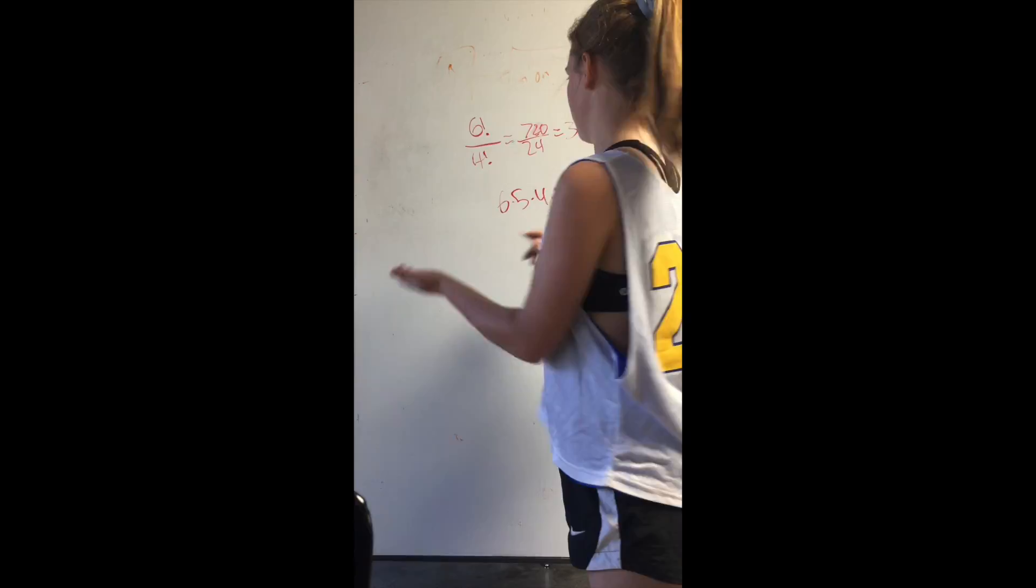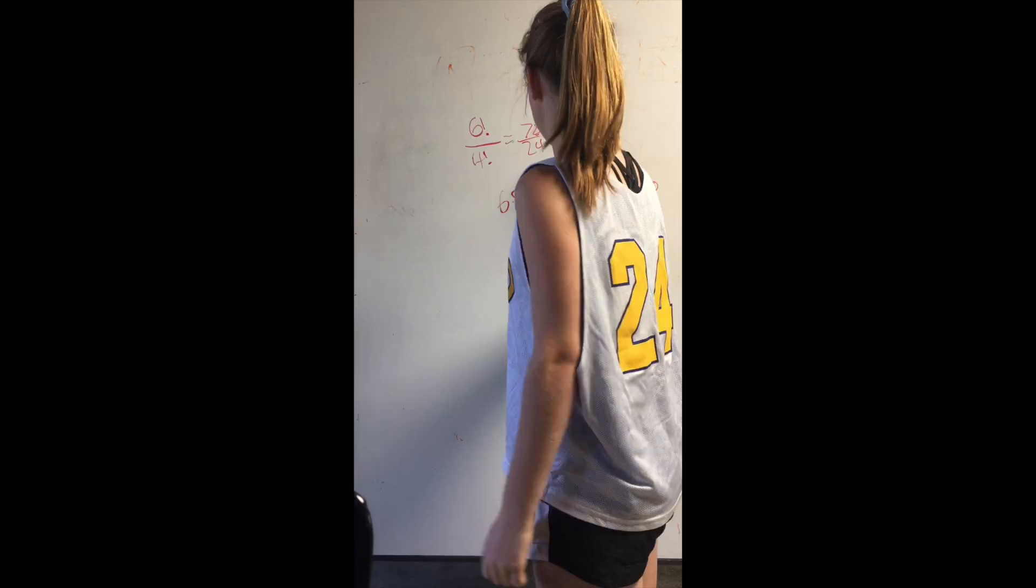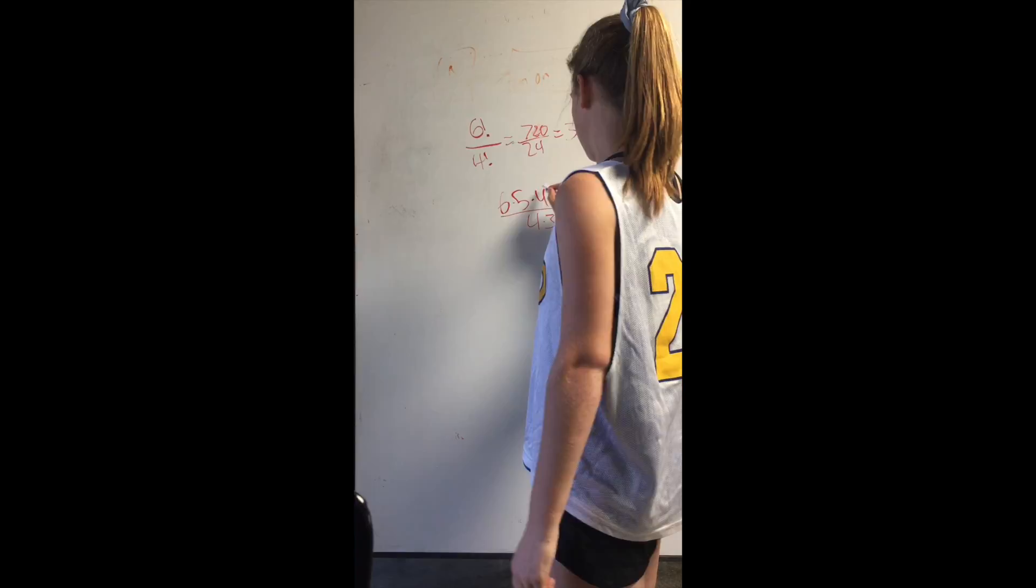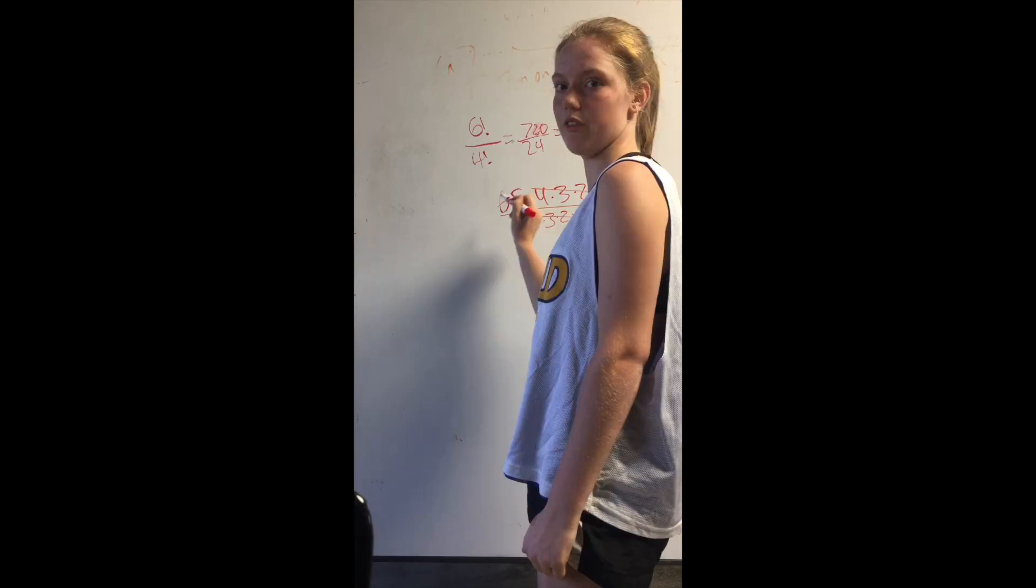But there's an easier way to do this, because that's a lot of math. We can take 6 times 5 times 4 times 3 times 2 times 1 and put it over 4 times 3 times 2 times 1, which is factorial 4. We can cancel out 4 times 3 times 2 times 1 on both sides. We can just do 6 times 5, which would be 30.